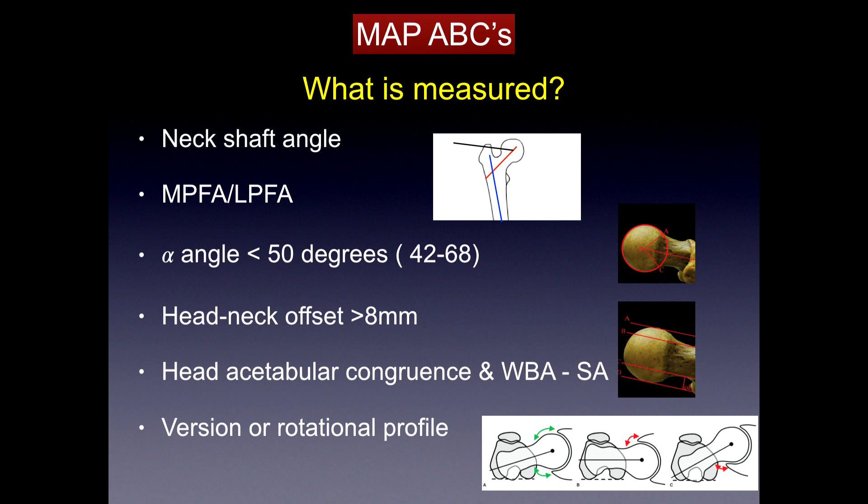You heard about the MAP ABCs mnemonic used in limb reconstruction: measure your alignment — the MAD. Look at the angles of your limb, pick where the deformity is, select the apex of your deformity, decide how and where you're going to cut the bone and correct it using gradual or acute plates, nails, whatever. We measure the neck-shaft angle, medial or lateral proximal femoral angles, the alpha angle and head-neck offset for impingement, sphericity and range of motion, coverage, cartilage, weight-bearing surface area ratio, and version or rotational profile.